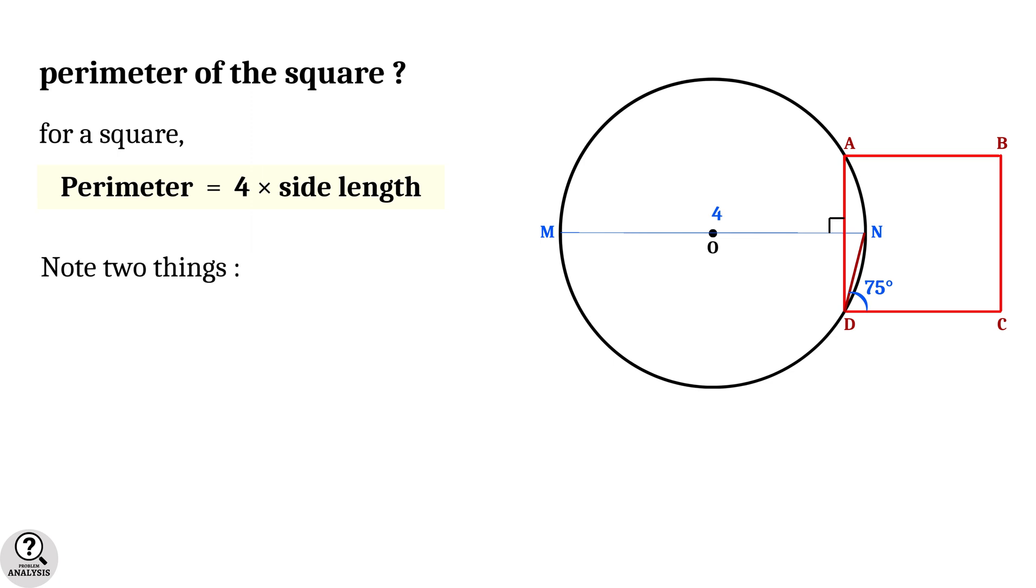Now, note two things which are immediate from the given values. First one is, radius of the circle is diameter divided by 2 equal to 2 units. And the second one, angle ADN equal to 90 degrees minus 75 degrees, that is equal to 15 degrees.